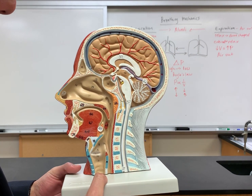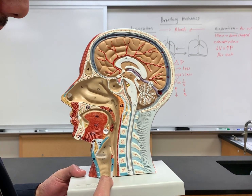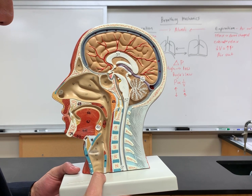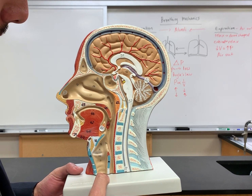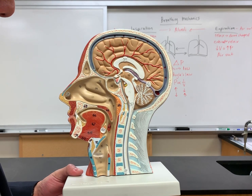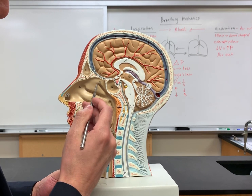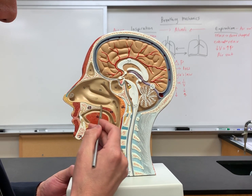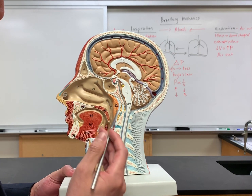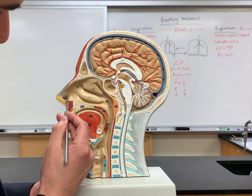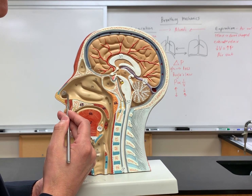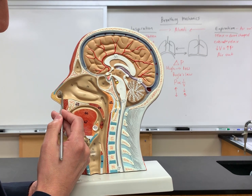In this video, we're going to go over the half head model and look at some of the respiratory structures. The first thing is this entire structure here is the nasal cavity, so that's number 57. You also have the nasal vestibule, which is number 52.